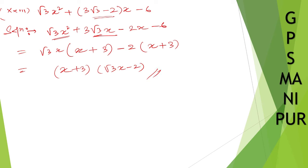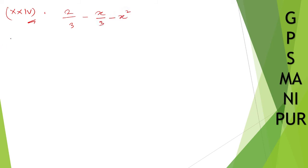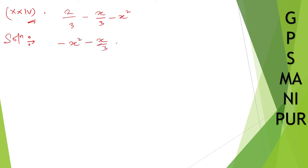Now we'll do roman number 24. Let me write down the question. I think there is some mistake — the question written is 7, but it must be 2. I've verified it according to the answer. So the expression is 2 by 3 minus x by 3 minus x squared. Make it into descending order first: minus x squared minus x by 3 plus 2 by 3.